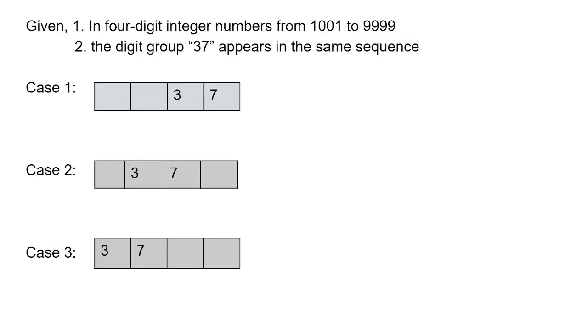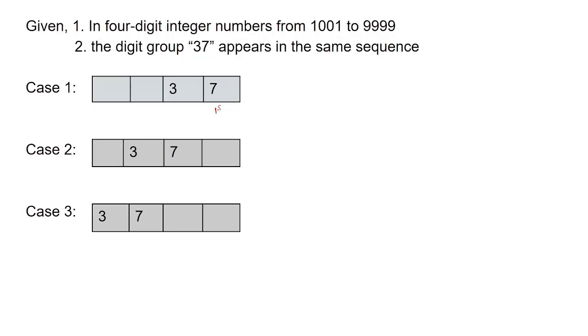So now let's solve this problem. The given data is that the number is from 1001 to 9999, and the second important fact is the digit group '37' appears in the same sequence.